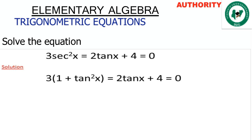Now, from our Pythagorean identity — where sin²x + cos²x = 1 — we have the formula 1 + tan²x = sec²x. So we'll replace sec²x with (1 + tan²x). We now have 3(1 + tan²x) minus 2tanx plus 4 equals 0.